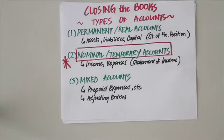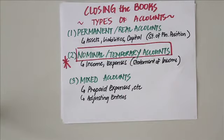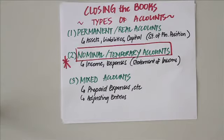There are three main types of accounts: the permanent or real accounts, the nominal or temporary accounts, and the mixed accounts. Permanent or real accounts have balances which are carried over to the next accounting period. These include balances on the statement of financial position — namely your assets, liabilities, and capital.